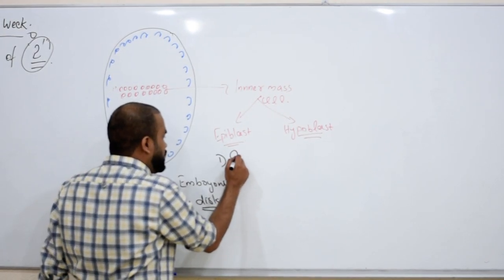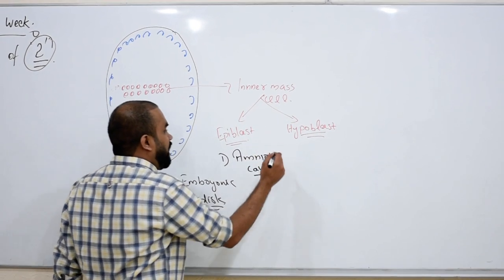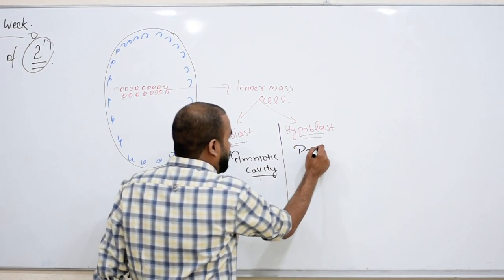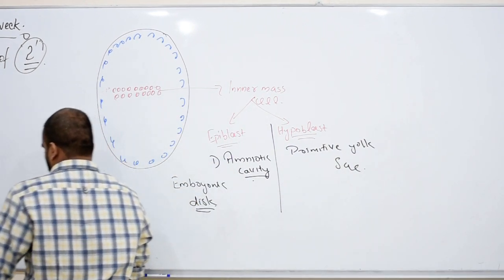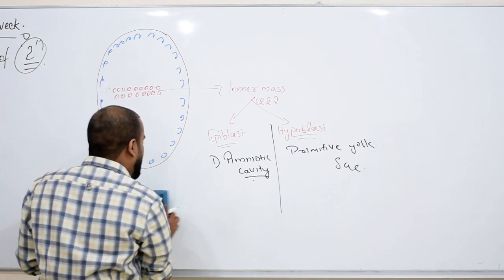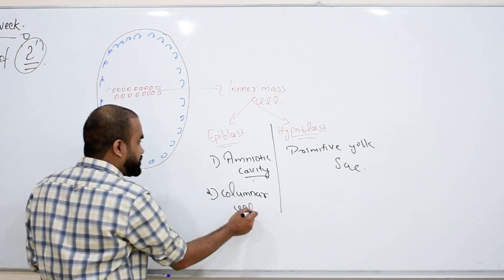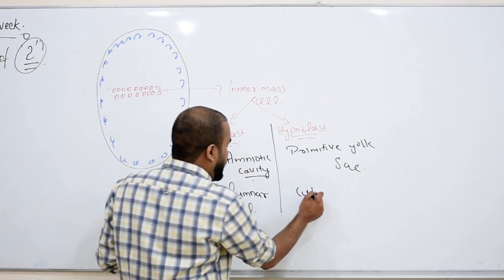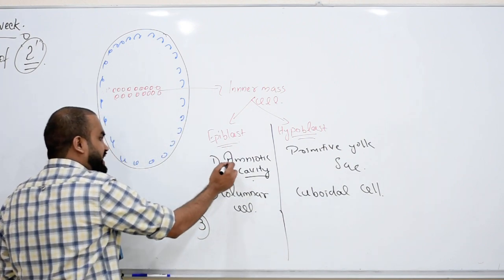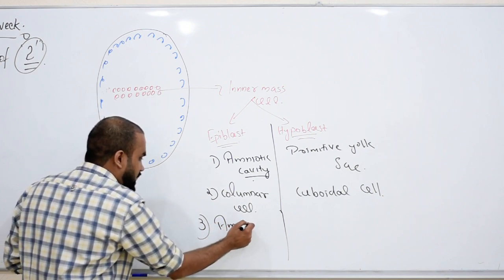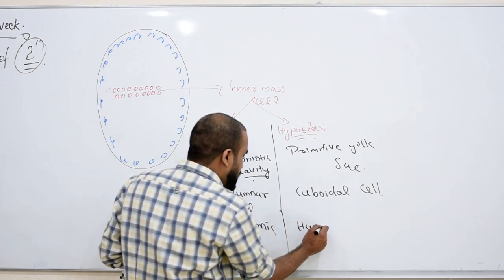From the epiblast arises the amniotic cavity. From the hypoblast arises the primitive yolk sac. Epiblast is made up of columnar cells, while hypoblast is made up of cuboidal cells. The amniotic cavity is lined by amniogenic cells, and there is a membrane covering the yolk sac called Heuser's membrane.